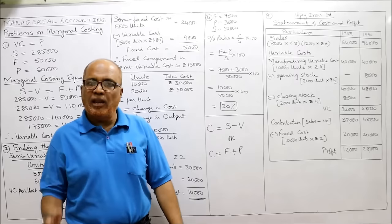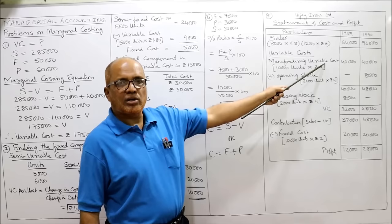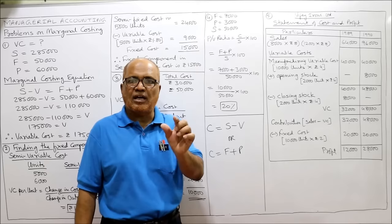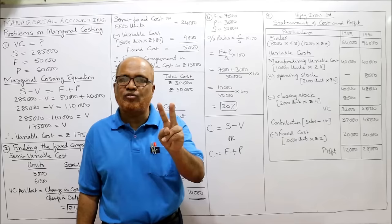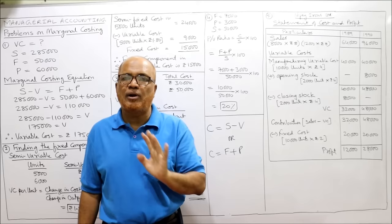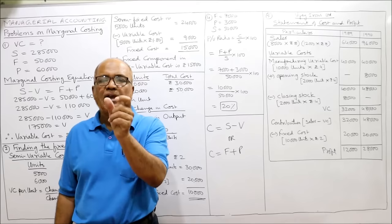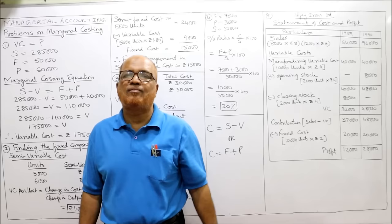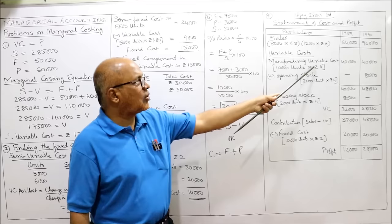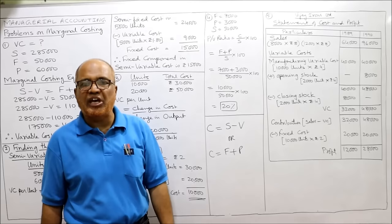Manufacturing variable cost: 10,000 units produced each year. Variable cost per unit = direct material 3.50 + direct labour 0.50 = 4 rupees. So 10,000 × 4 = 40,000 rupees manufacturing variable cost for each year. To this we add opening stock and subtract closing stock. Opening stock in 1990 = 2,000 units × 4 = 8,000. So 1990: 40,000 + 8,000 = 48,000.